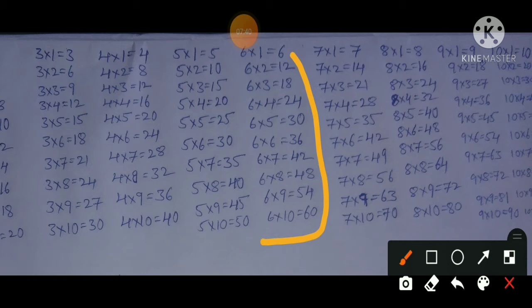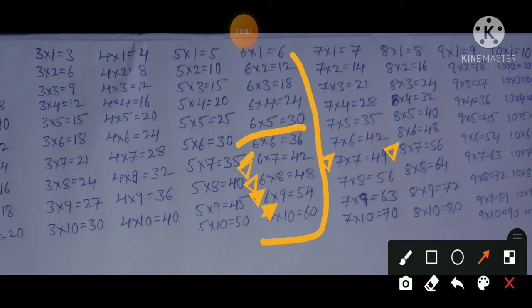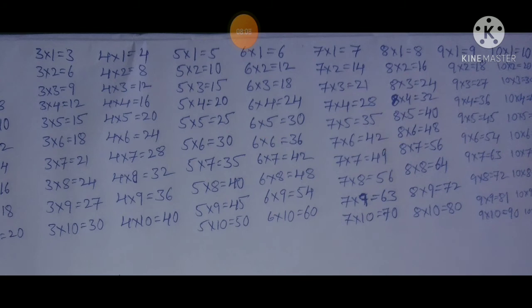Coming to the 6 times table. We already covered up to 6×5=30 in previous tables. So we learn from 6×6=36 onwards: 6×7=42 and 7×6=42; 6×8=48 and 8×6=48; 6×9=54 and 9×6=54; 6×10=60 and 10×6=60. Okay, next.